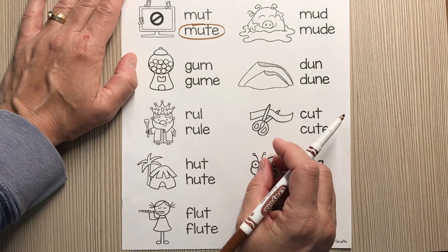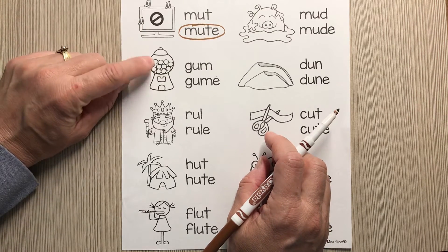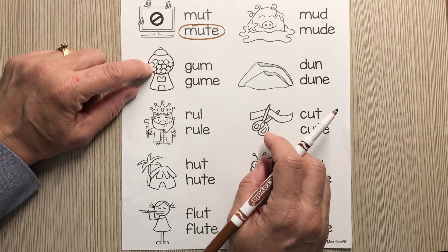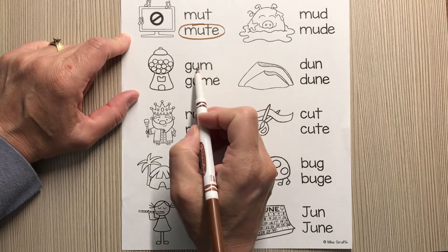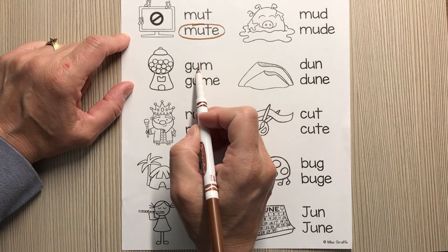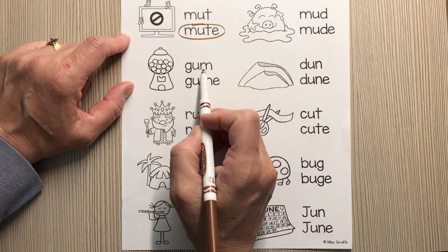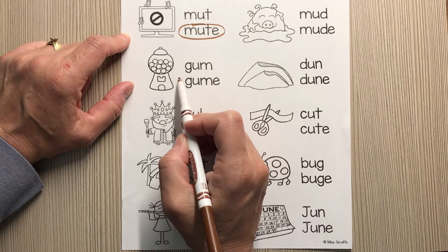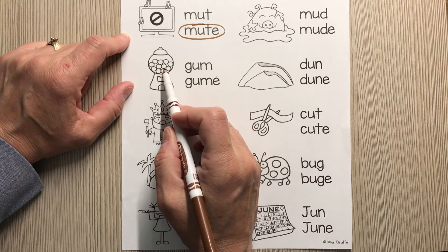Let's try one more together and then you're going to do the rest on your own. What's in this machine? It is gum. Gum. So here there's no silent E. The U will say 'uh.' Let's do our sounds. Gum. What's that word? Gum. Is that what we need? It is.